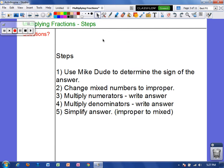Now, the steps to multiplying fractions. The only new thing you have to do is just use MikeDude. And we're going to do that first. That way we don't forget. We want to find the sign of our answer first, then solve. So we want to change mixed numbers to improper, multiply numerators, multiply denominators, and simplify the answer. And if it's improper, make it mixed. So steps two through five, you've actually done before. Step one's the only new thing here. So let's do some examples together.